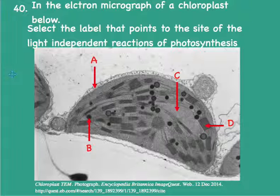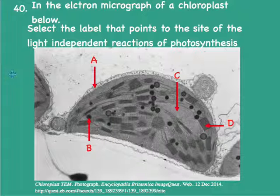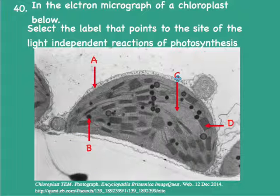In the electron micrograph of a chloroplast below, select the label that points to the site of the light-independent reactions of photosynthesis. The light-independent reactions, sometimes referred to as the dark reaction, require no light — also known as the Calvin cycle. The Calvin cycle, or light-independent reactions, occur in the stroma of the chloroplast, label C, whereas the light-dependent reactions occur on the thylakoid membranes. So the answer is C.